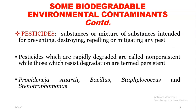Pesticides are substances intended for preventing, destroying, repelling, or mitigating any pest. Pesticides that are rapidly degraded are called non-persistent, while those that resist degradation are termed persistent pesticides. Examples of bacteria that can degrade pesticides include Bacillus and Staphylococcus.